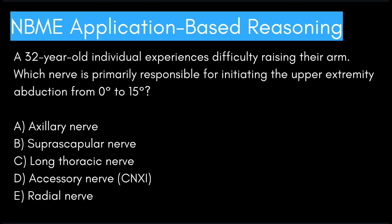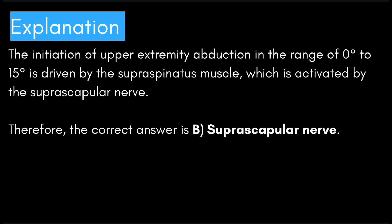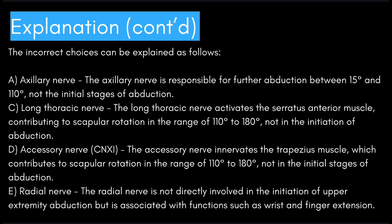The initiation of upper extremity abduction in the range of 0 to 15 degrees is driven by the supraspinatus muscle, which is activated by the suprascapular nerve. Therefore, the correct answer is B: suprascapular nerve.